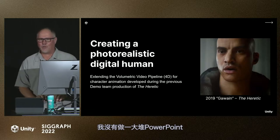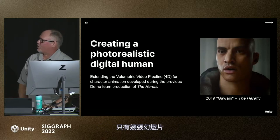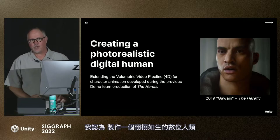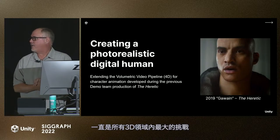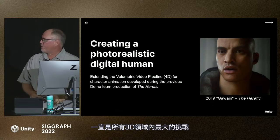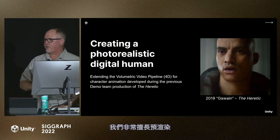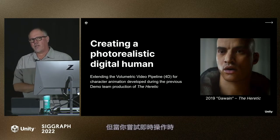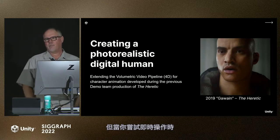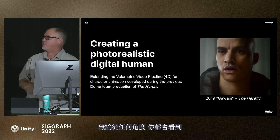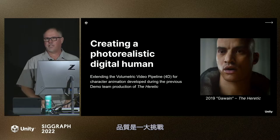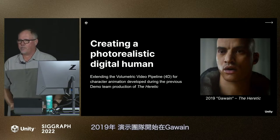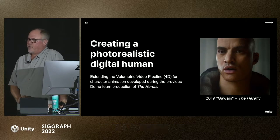I'm not going to do a whole lot of PowerPoint, but just a couple slides. Creating a photorealistic digital human has been one of the biggest challenges in all of 3D. We're pretty good at it when it comes to pre-rendered — you can throw it through Nuke, render it all out and make it look amazing. But doing that real-time, where you could look at it from any perspective and see that quality, is a huge challenge. The demo team started back in 2019 doing a realistic human with Gwaine and the Heretic.